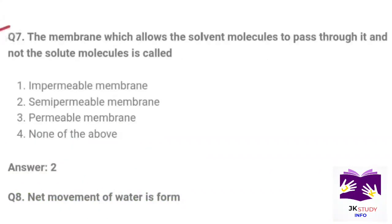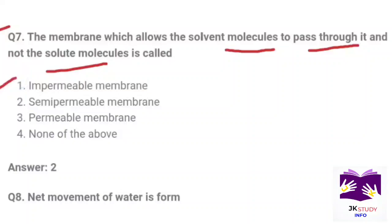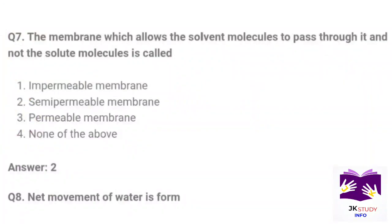Next question: The membrane which allows the solvent molecules to pass through it and not the solute molecules is called? Option 1: impermeable membrane. Option 2: semi-permeable membrane. Option 3: permeable membrane. Option 4: none of the above. Correct option is Part 2: semi-permeable membrane.